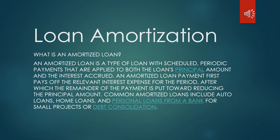Before we discuss how to solve the amortization of loan, let us first discuss the concept of amortized loan or loan amortization. What is this amortized loan? It is a type of loan with scheduled periodic payments that are applied to both the loan's principal amount and the interest accrued. So we have two factors here: the principal amount, which is actually the original amount borrowed, and the interest — the additional payments with regards to borrowing of funds.